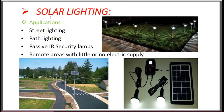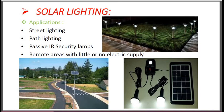Applications of solar lighting: First, for street lighting purposes — solar energy is utilized in street lighting or path lighting. Passive IR security lamps. Remote areas with little or no electric supply, where no grid power is available. Also for decoration purposes such as garden lights. The solar panel, charge controller, and LED lamp work together — the charge controller controls the lamps to utilize solar energy in the form of electric energy.